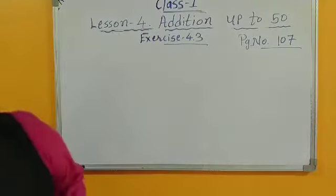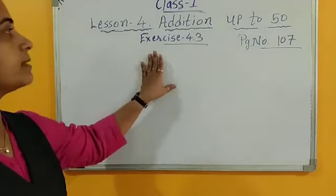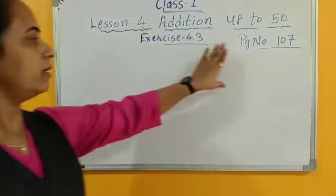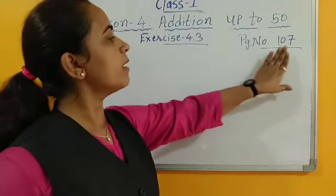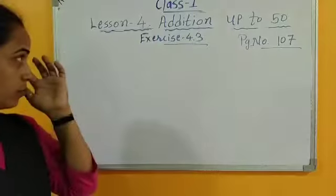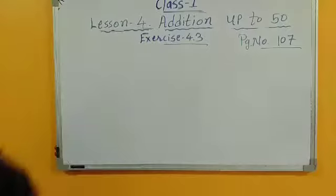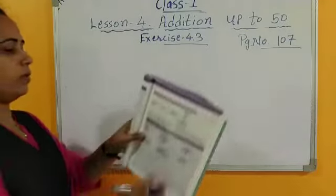Now today in lesson number 4, addition up to 50, exercise 4.3, page number 107 in your textbook. Exercise 4.3, page number 107, open your textbook.